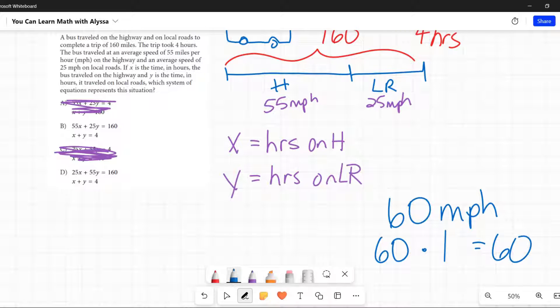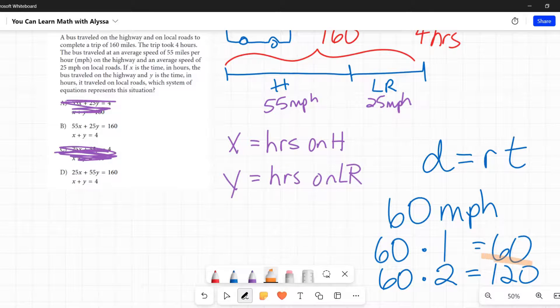If I was traveling 60 miles per hour and I traveled for one hour, how far did I travel? 60 miles. Every hour times one hour equals 60 miles. What if I traveled for two hours? 60 miles per hour for every hour, and I traveled two hours, that would be 120. This is a representation of the formula distance equals rate times time. There's our distance, there's our rate, there's our time.